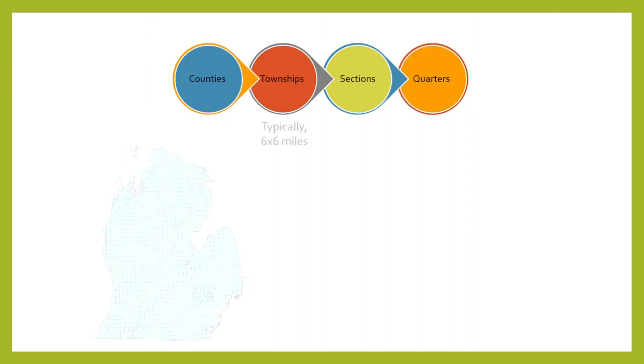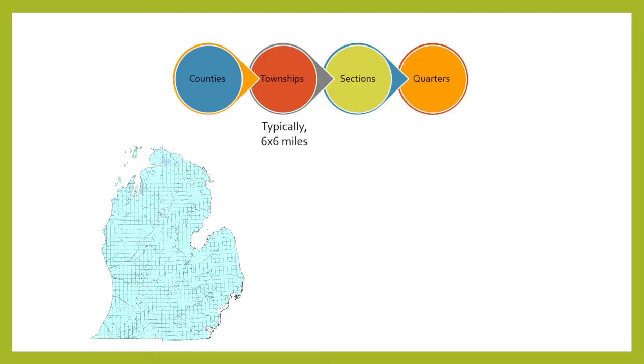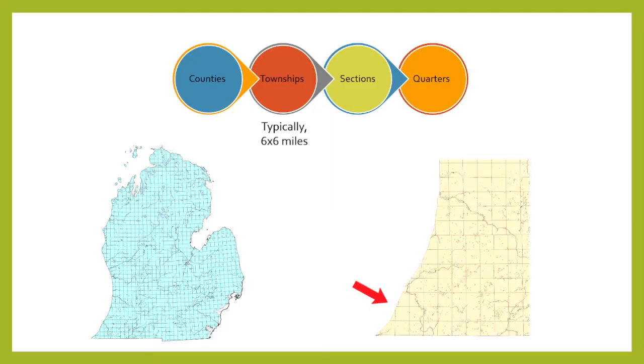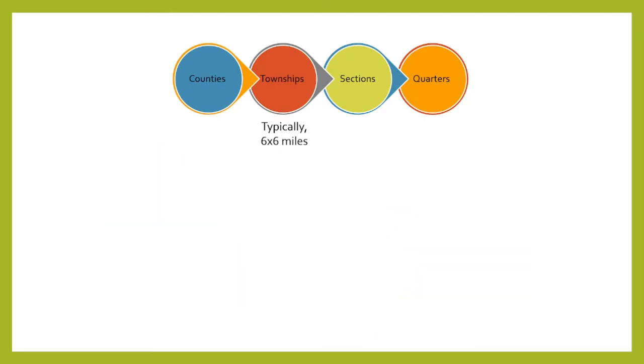Townships are typically six square miles in area, though the most common exceptions lie along coastlines where a designated linear boundary is substituted by a natural feature such as a shoreline. Within each township there are 36 sections, each with an area of one square mile.